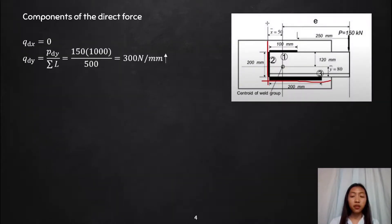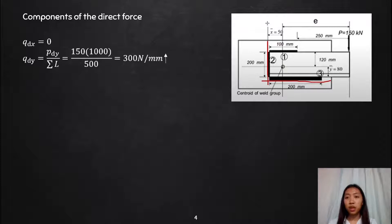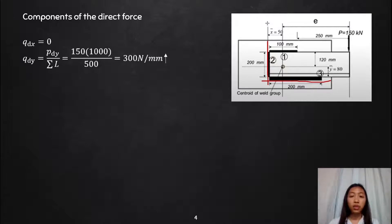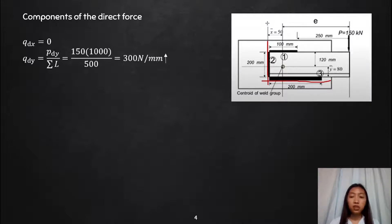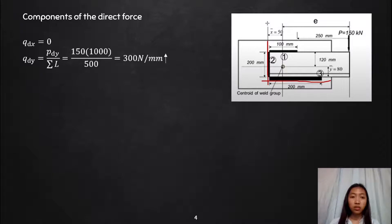First thing we need to do is compute for the direct force. Makikita nyo dito sa figure, we only have a vertical force, which is P = 150 kN. So wala tayong horizontal force, kaya yung q_dx natin will be equal to 0. And for q_dy, given ang formula: P × d_y all over the summation of length. So 150 multiplied by 1,000 all over 500 — which is 100 + 200 + 200 — is equal to 300 Newton per millimeter.